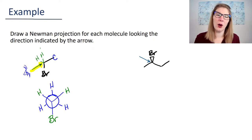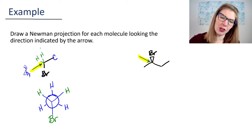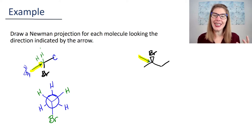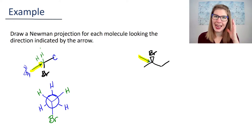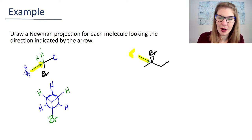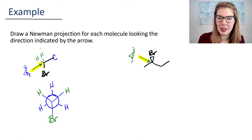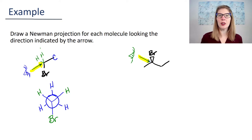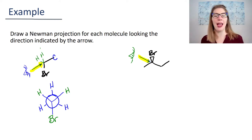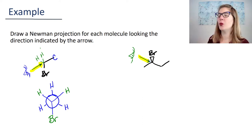For the next one, I changed the structure a little bit and changed the location of where you want your eyeball looking. The key is that you need to put your eyeball right at the arrow position and look at the molecule from that direction.